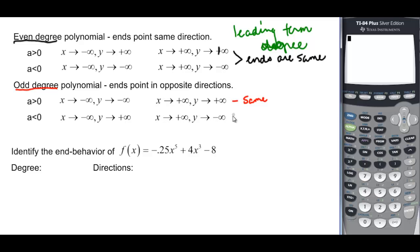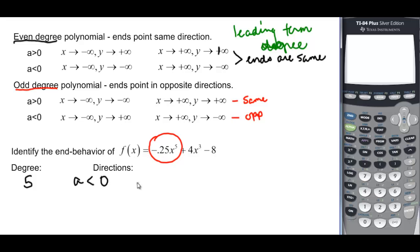Let's identify what we have in this example: negative 0.25x to the fifth plus 4x cubed minus 8. The degree is 5, and a is less than 0 because it's negative 0.25. This means it's odd degree. So coming to the odd rules with a less than 0, from the left it's going to start up — y goes to positive infinity — and it's going to end in negative infinity, or down.